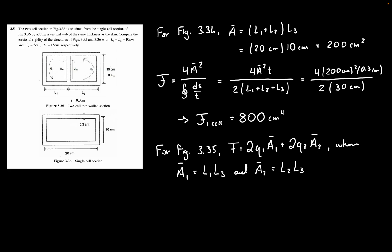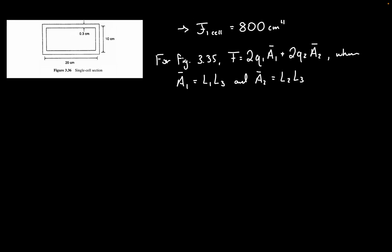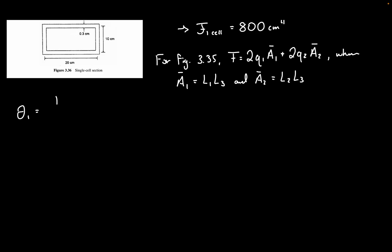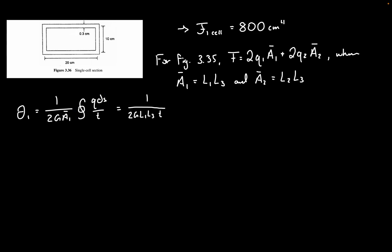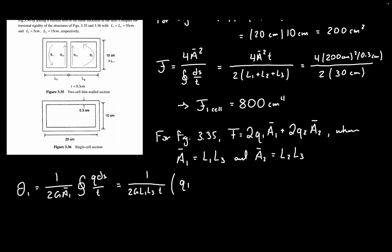We calculate the twist rate for the first section. The formula is 1 divided by 2 times G times A1-bar times t, multiplied by the open integral of the shear flow times dS. Since t is constant, we pull it out of the integral and substitute A1-bar as L1 times L3. This integral sums perimeters multiplied by the corresponding shear flow, so Q1 passes through two L1 sides and one L3 side.